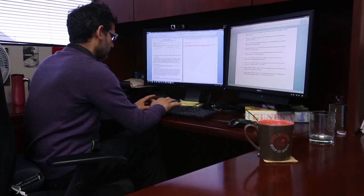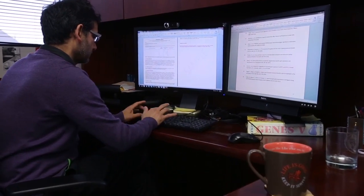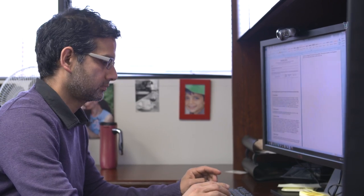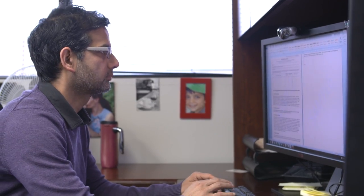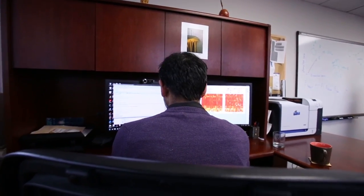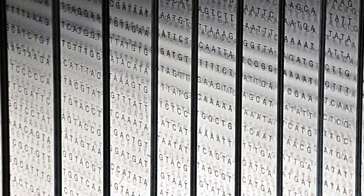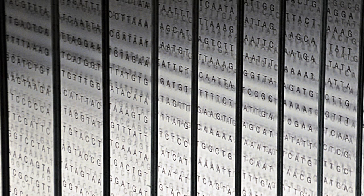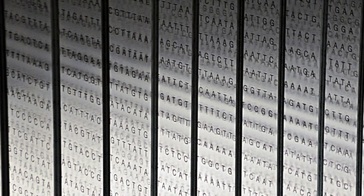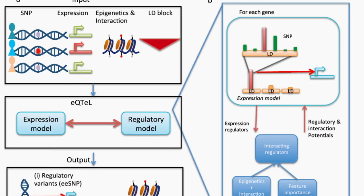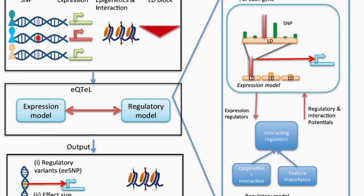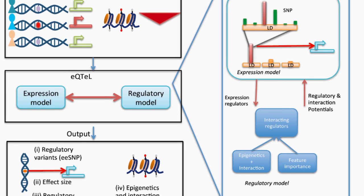Ultimately, everything hinges on that process as to what makes it manifest itself into a phenotype or a disease or whatever. So we are looking for a needle in a haystack, and when we do that we need lots and lots of data to go through to make sure the statistical inferences we are making are robust.